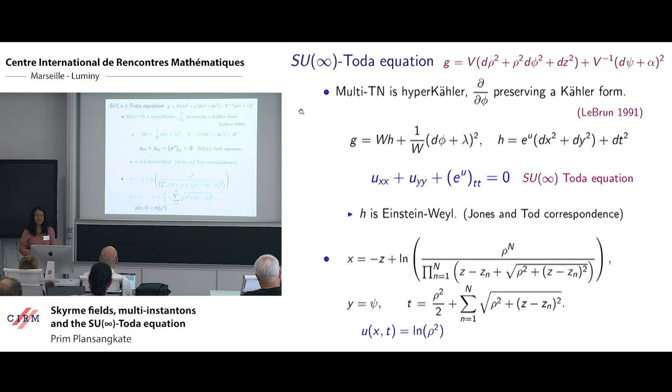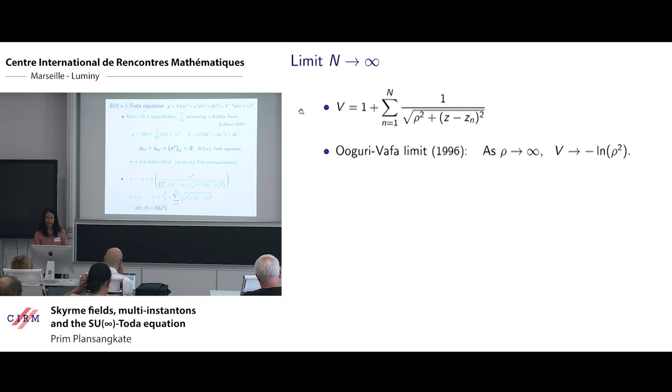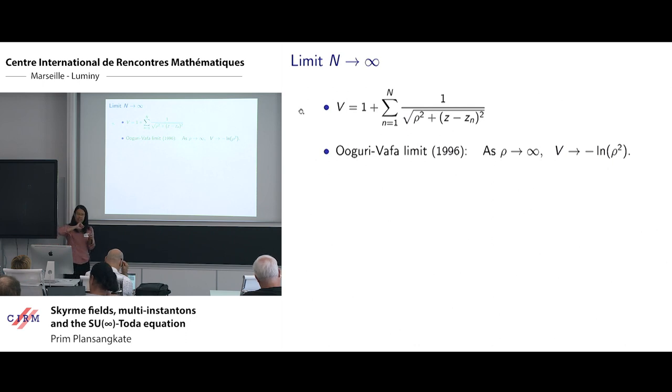To get a better looking expression, I then do two more things. The first thing is that I'll consider the limit where the number of centers of the Taub-NUT matrix becomes large. So I'll let this n go to infinity. In that limit, the harmonic functions approaches the Hikari-Wafa limit, that far away from that line of centers, then it can be approximated by this function here.